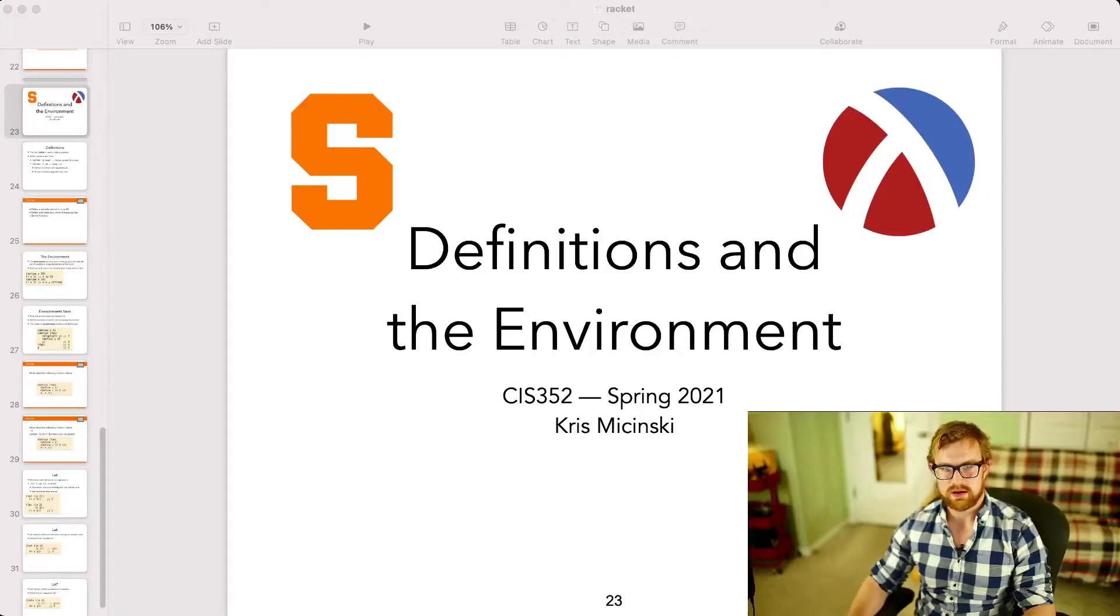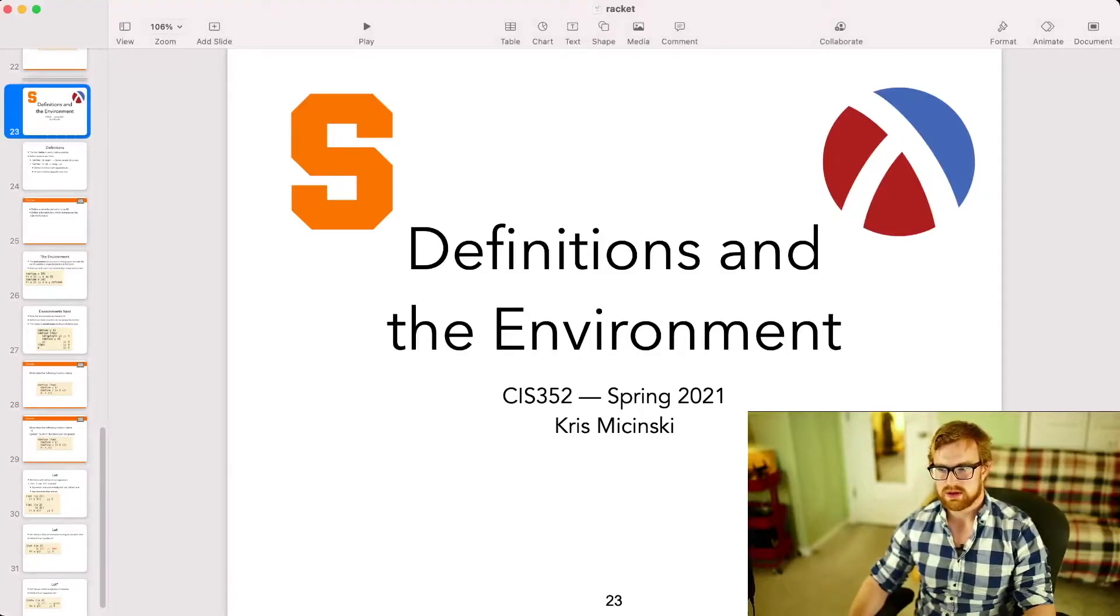So there are two main forms that we use to add things to the environment in Racket and these are both the define forms. Define comes in two variants. The first allows us to define variable bindings. So if I define id to be expr, I'm saying bind the identifier id to the value of expr. The second form allows me to define functions with a certain number of arguments all named and then usable from the body.